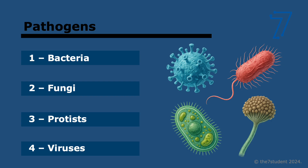A disease-causing organism is called a pathogen. That's the definition of a pathogen, and they're divided into four groups: bacteria, fungi, protists, and viruses.